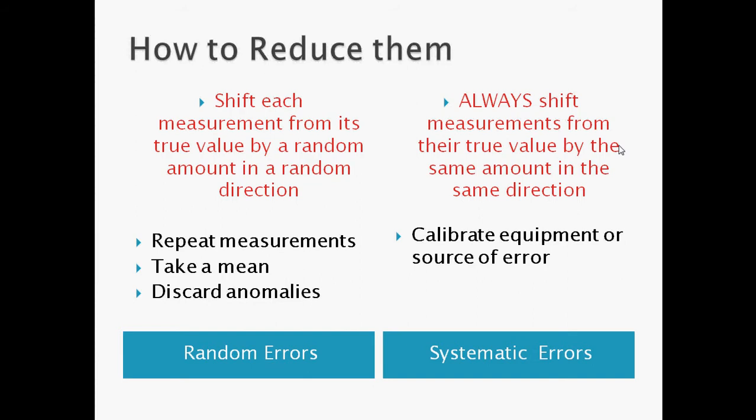In terms of systematic errors, now they always shift measurements from their true value by the same amount in the same direction. So then it's easier to predict and it's easier as well if I know where the error is to actually try to make that their effects are not seen. I can then shift all my measurements if I want at the end.